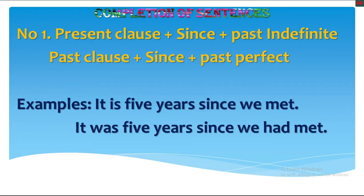Rule number 1: A present clause plus 'since' is followed by a past indefinite. A past clause plus 'since' is followed by a past perfect. Example: 'It is 5 years since we met' — this is the example of the first part. The example of the second part: 'It was 5 years since we had met.' You can clearly see the difference in using past indefinite and past perfect.